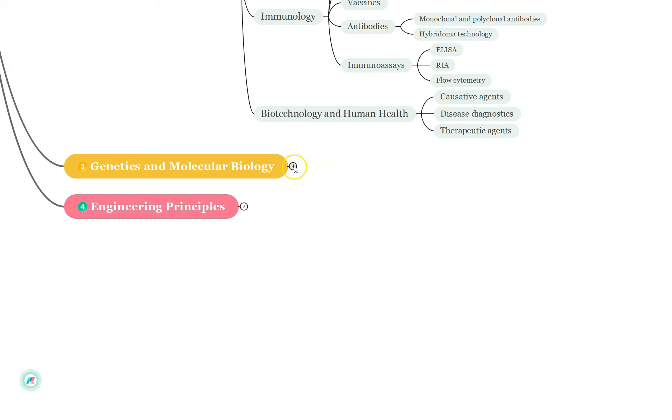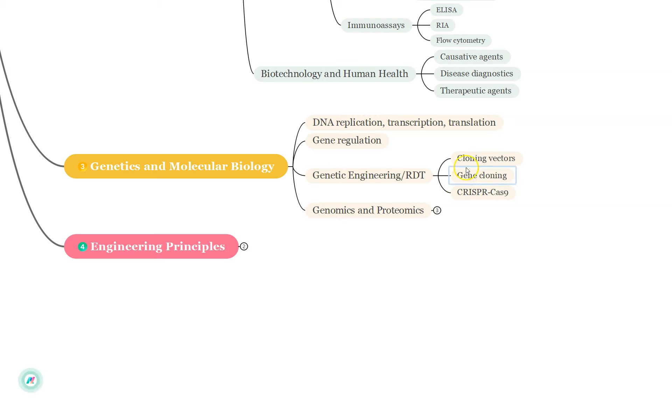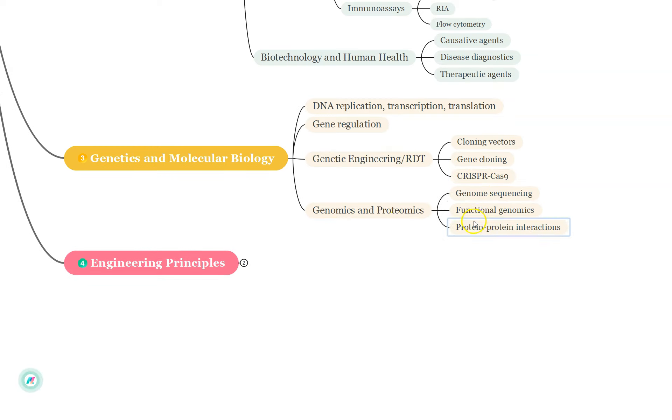From Genetics and Molecular Biology: DNA Replication, Transcription, Translation, Gene Regulation is important. Under Genetic Engineering and Recombinant DNA Technology, focus on Cloning Vectors, Gene Cloning and also recently they are asking about CRISPR-Cas9. From Genomics and Proteomics, study the Genome Sequencing, Functional Genomics and also regarding the Protein-Protein Interactions.